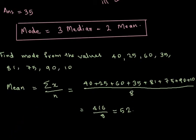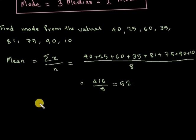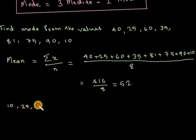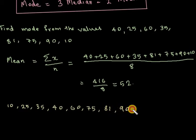Next we find the median. Arrange the values in order: 10, 25, 35, 40, 60, 75, 81, and 90.